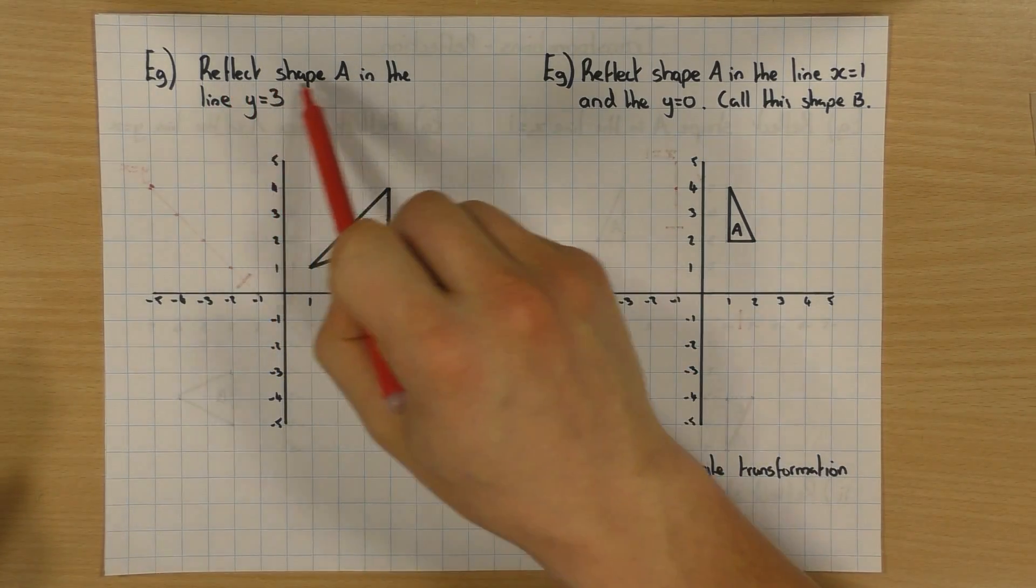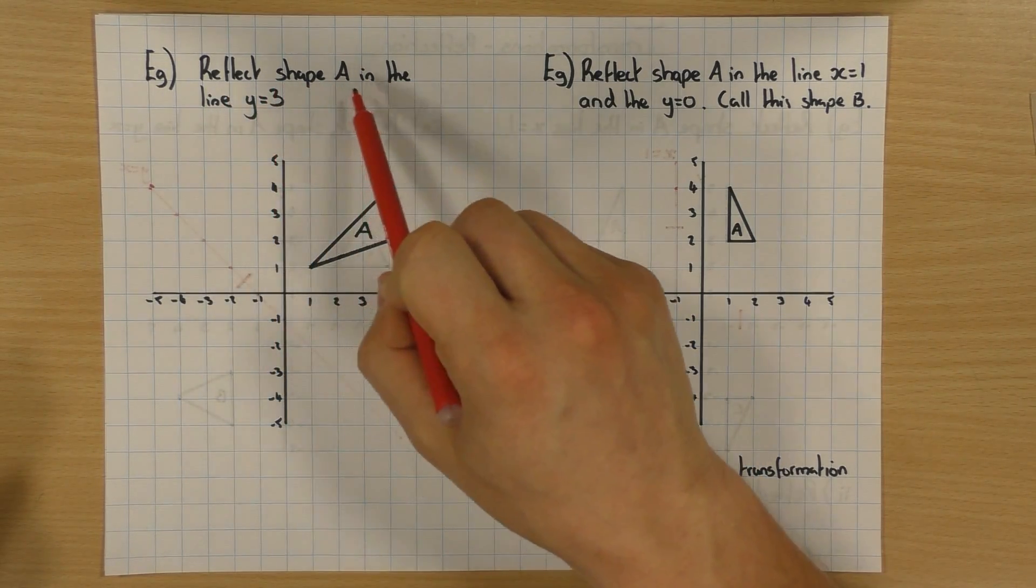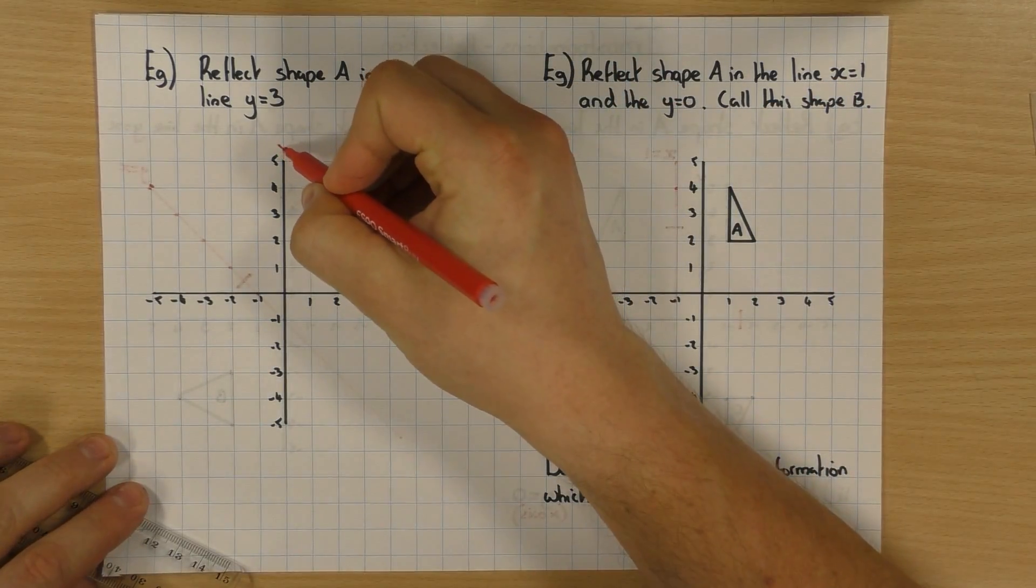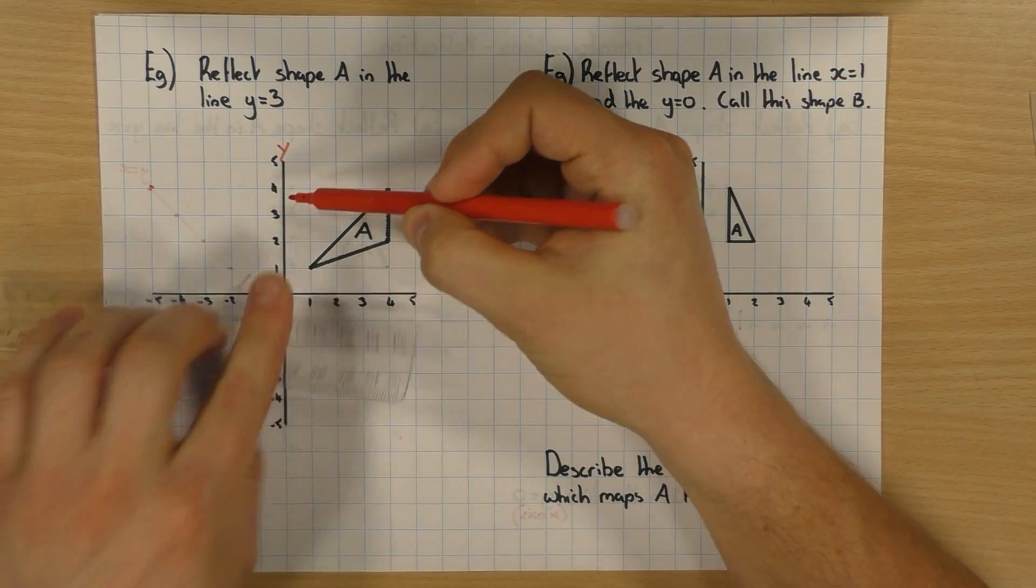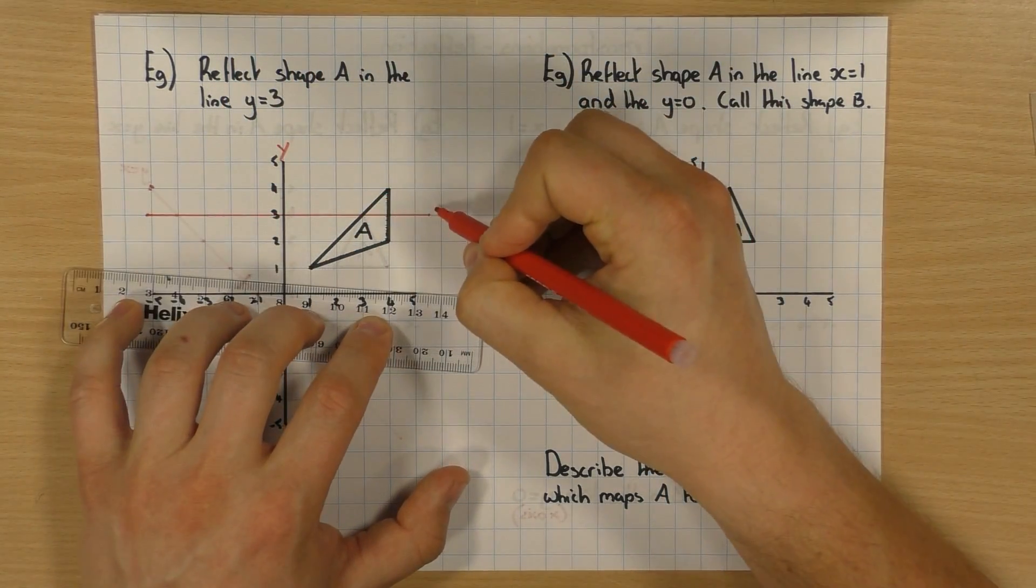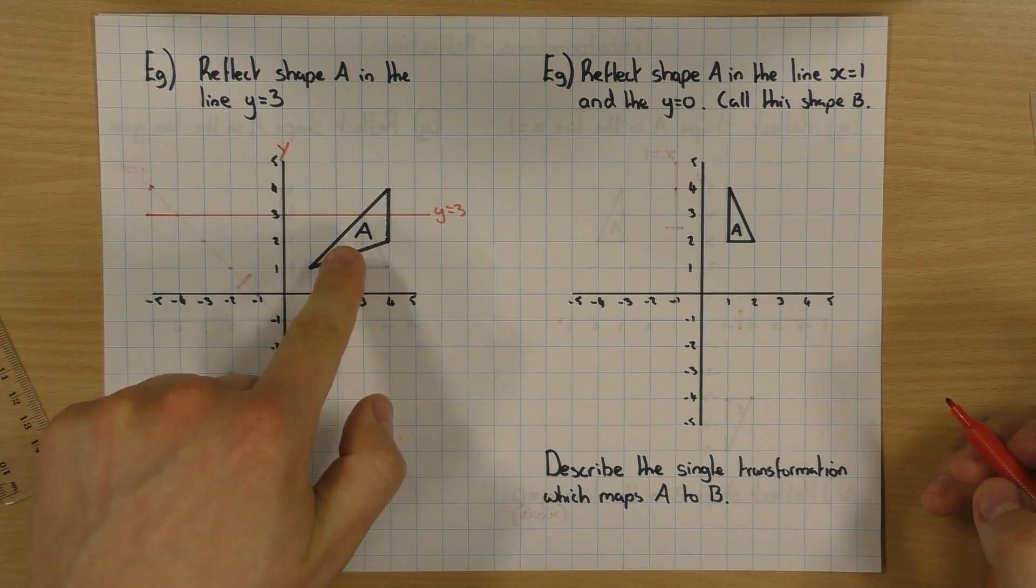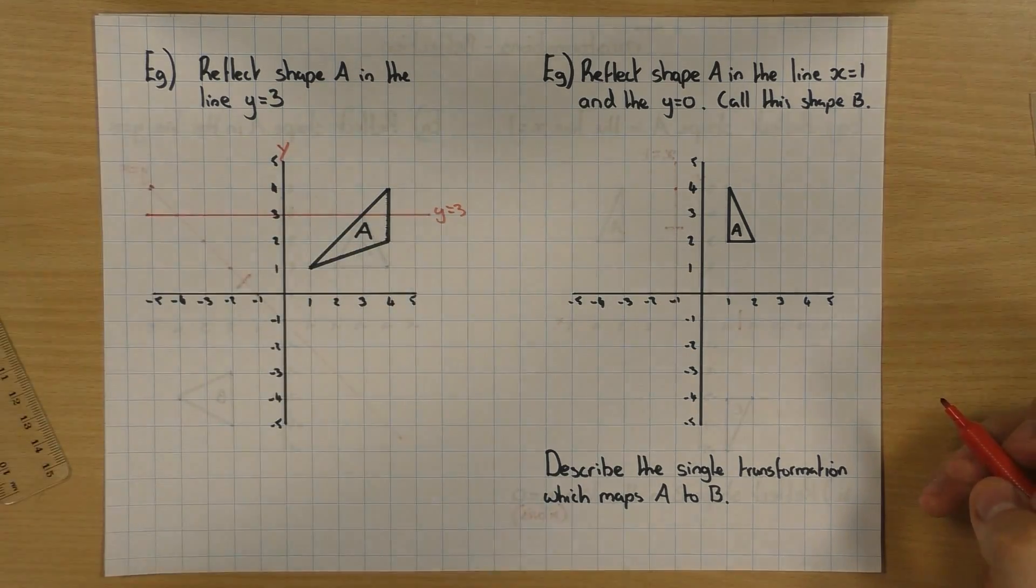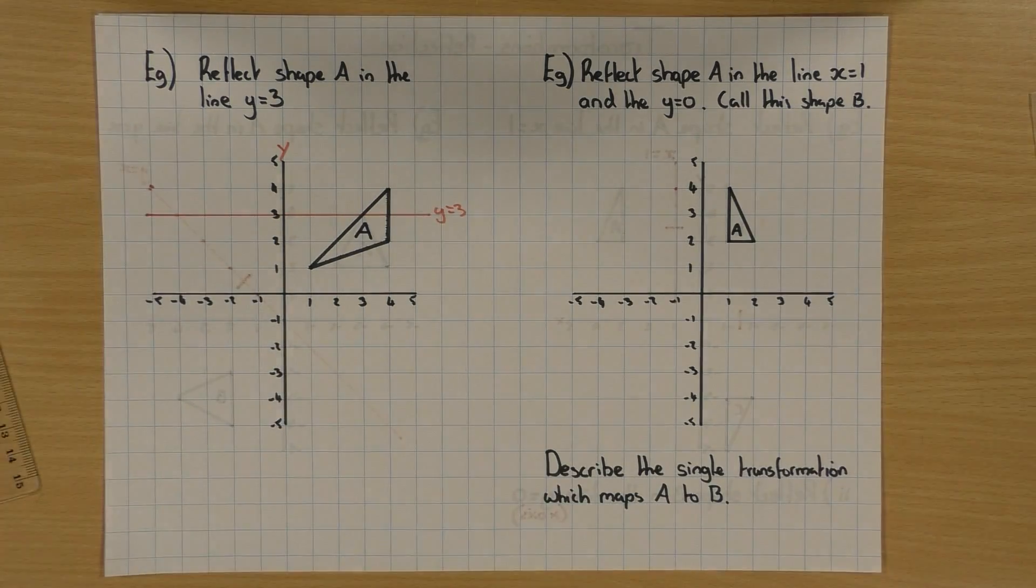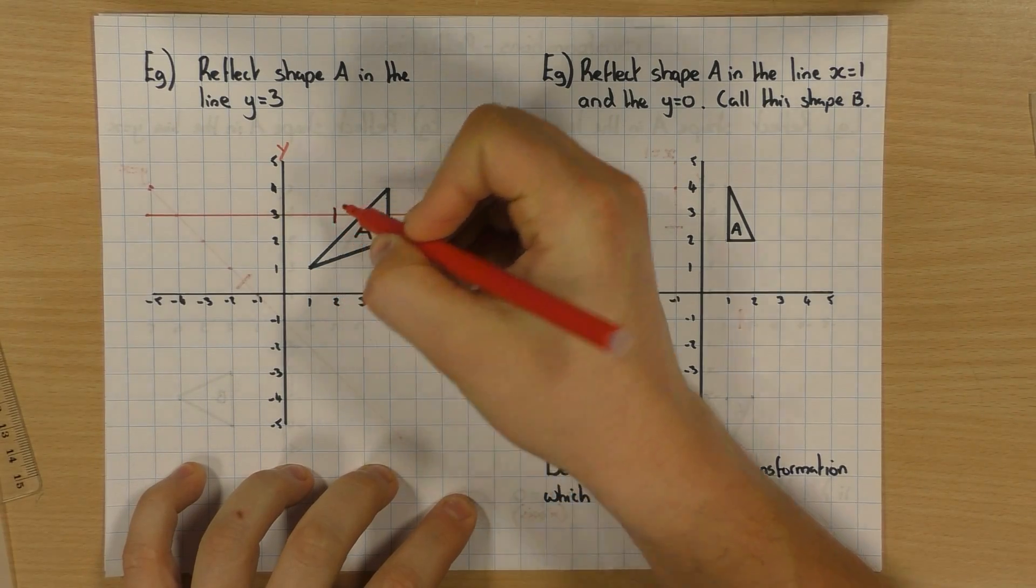So here's a shape. I'm going to reflect shape A in the line Y equals 3. So remember, just like before my previous examples, I'm looking at my Y axis. Y equals 3 is there. So it's a horizontal line going through that. There's my line Y equals 3, and that's where I'm going to reflect it. And people get a little bit confused because obviously this shape goes through that line. But don't be put off by it. Just do exactly the same thing. My line's already horizontal, so that's handy. Put your little vertical mark on, and then get your tracing paper out.